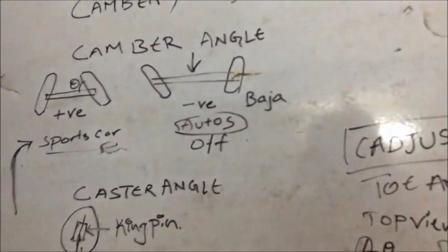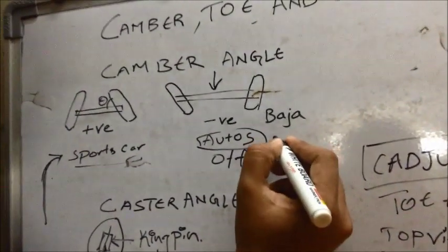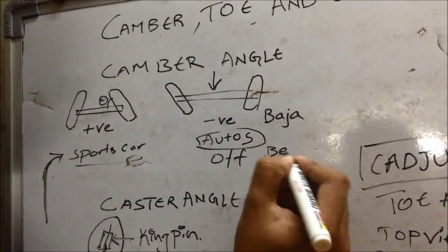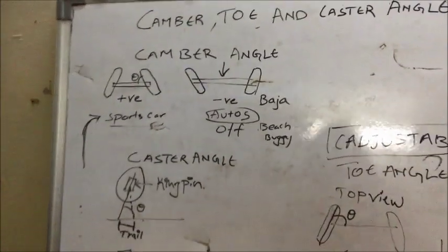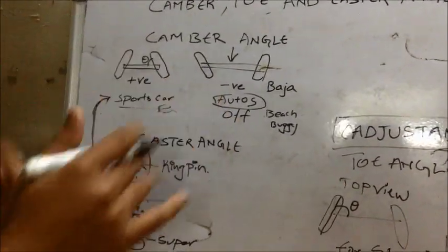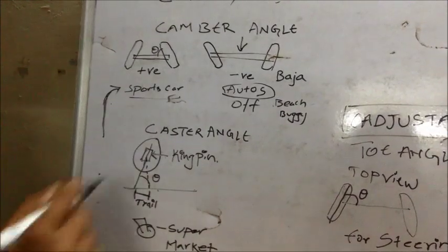It is also used in off-roading vehicles like Baja vehicle. Yes, you all have heard about it. Baja vehicle. Then beach buggies. These are also vehicles which are aligned with negative camber angle. So these are the camber angles which play a very important role in the stability.